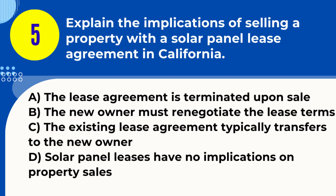Question 5. Explain the implications of selling a property with a solar panel lease agreement in California. A. The lease agreement is terminated upon sale. B. The new owner must renegotiate the lease terms. C. The existing lease agreement typically transfers to the new owner. D. Solar panel leases have no implications on property sales.